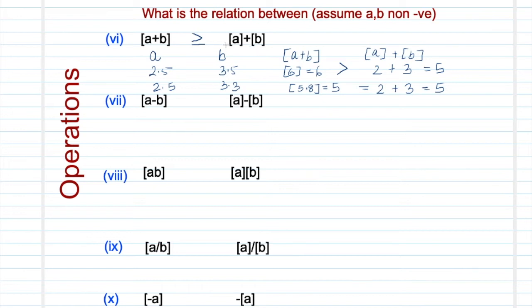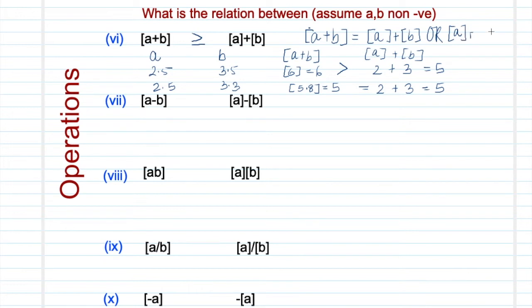In fact, there is a very clear relationship: ⌊a+b⌋ equals either ⌊a⌋ + ⌊b⌋, or ⌊a⌋ + ⌊b⌋ + 1. So in some cases it will be equal, and in other cases when it's not equal it will actually be 1 greater than ⌊a⌋ + ⌊b⌋.